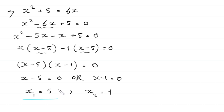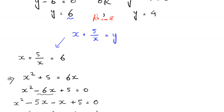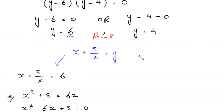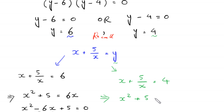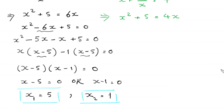So far we have two solutions. To find the other two solutions, we use y equals 4. The equation becomes x plus 5 over x equals 4. Multiplying both sides by x gives x squared plus 5 equals 4x. Moving 4x to the left-hand side gives x squared minus 4x plus 5 equals 0.